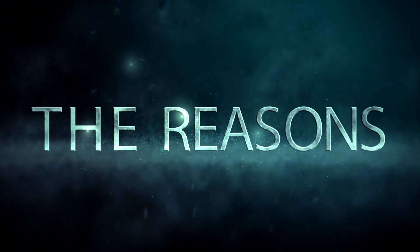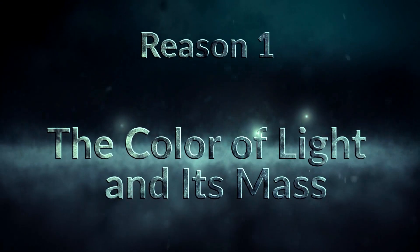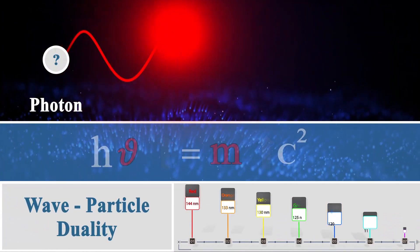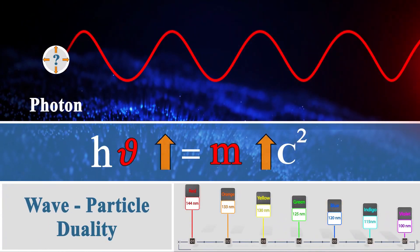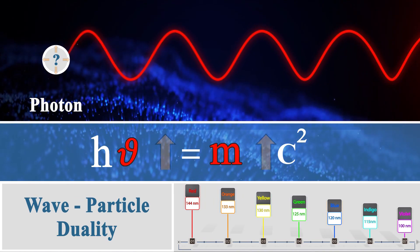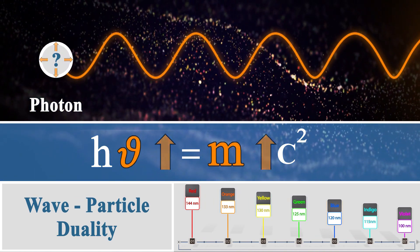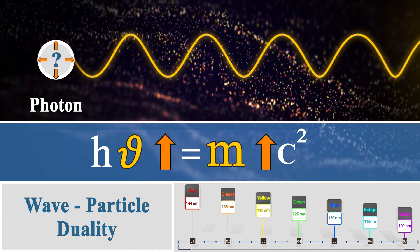The Reasons. Reason 1: The color of light and its mass. According to the wave-particle duality concept, the mass of moving photons will be changed based on their wavelengths. For example, in this theory, the mass of the blue photon is twice that of the red one.